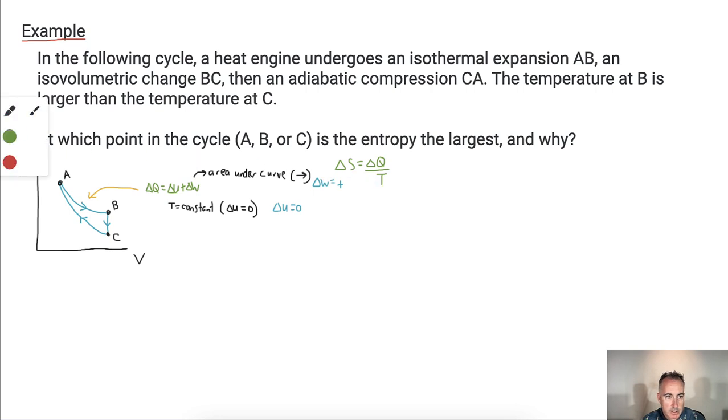What else do I know? From the delta W here, that is the area under the curve. Because it actually goes to the right, I know that delta W equals a positive value.